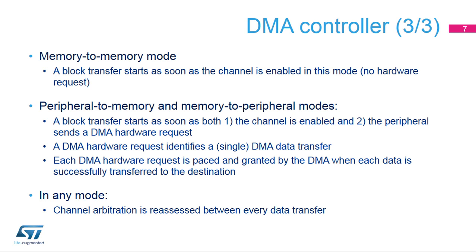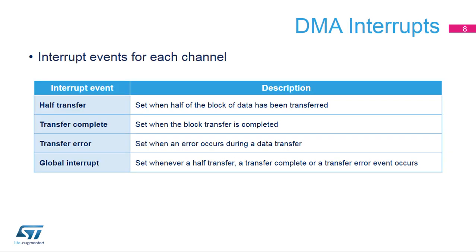A DMA hardware request identifies a single DMA data transfer. Each DMA hardware request is paced and granted by the DMA when each data is successfully transferred to the destination. In any mode, channel arbitration is reassessed between every data transfer. Each DMA channel can notify software with an interrupt triggered by any of four possible events: half-block transfer completion, block transfer completion, transfer error, or any of the three above events — in other words, global.